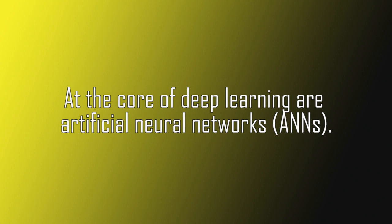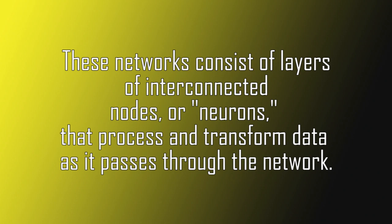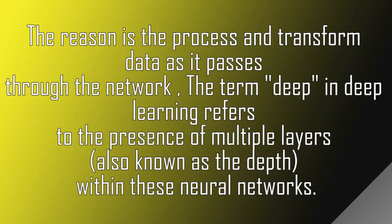At the core of deep learning are artificial neural networks. These networks consist of layers of interconnected nodes, or neurons, that process and transform data as it passes through the network. Why is it known as deep learning? The term 'deep' in deep learning refers to the presence of multiple layers, also known as the depth, within these neural networks.